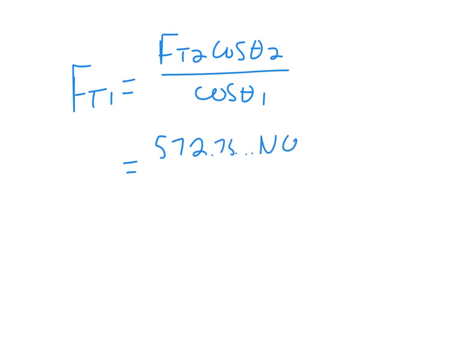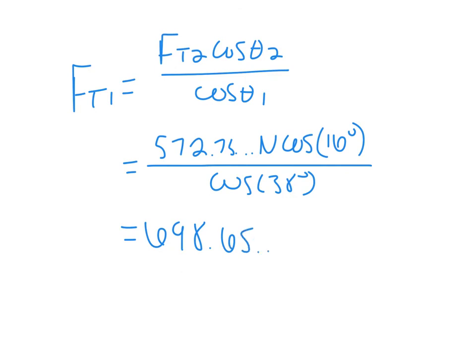We know that FT1 was equal to FT2 cosine theta 2 divided by cosine theta 1. This equals the unrounded number for FT2, 572.73 newtons, cosine 16 degrees divided by cosine 38 degrees. For FT1 you should get 698.65 newtons. One sig fig, FT1 is approximately 700 newtons.